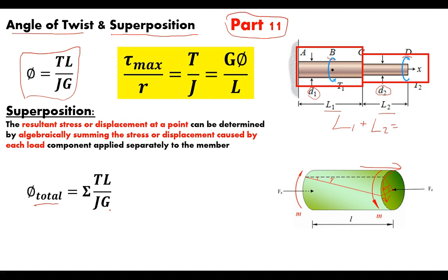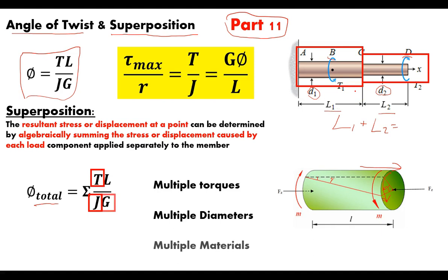There are several things that can cause you to need superposition. There are actually four primary reasons: having multiple torques (as in this example), multiple diameters (as shown in this diagram), multiple materials (which affects the modulus of rigidity), and the fourth - a shaft with a torque applied that is rigidly held at both ends, which gives us an indeterminate torsion example.